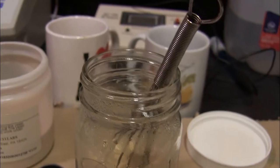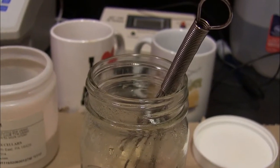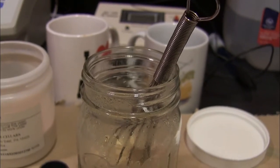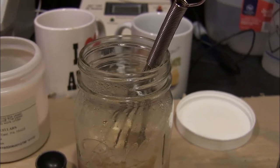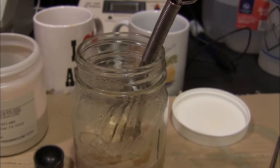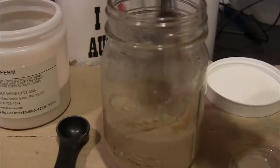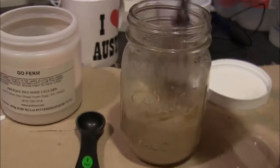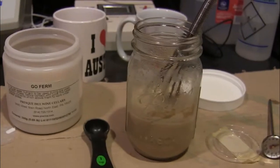When that temperature has decreased to 104 degrees Fahrenheit, we're going to hydrate our yeast in the GoFirm. After about 15 to 30 minutes, we're going to start introducing small amounts of the must into this jar and really get it kicking in this jar before we actually add it into the vessel.